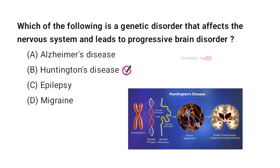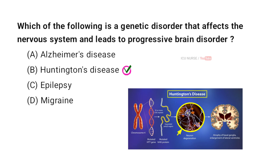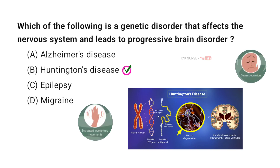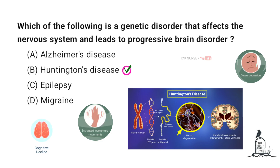Huntington's disease is a genetic disorder that affects the nervous system by causing the gradual degeneration of nerve cells in the brain. It is caused by a mutation in the HTT gene, leading to the production of an abnormal Huntingtin protein. This abnormal protein accumulates in brain cells, causing damage and death of neurons. As neurons die, it disrupts communication within the brain, leading to uncontrolled movements, emotional disturbances, and cognitive decline, with progressive worsening leading to severe disability and eventually death.